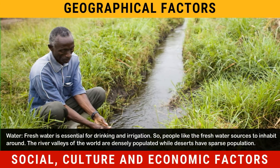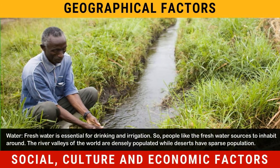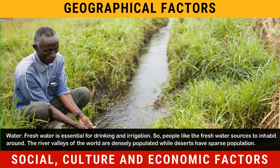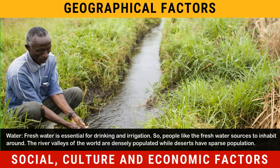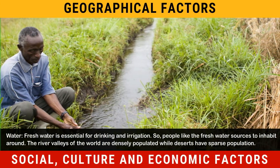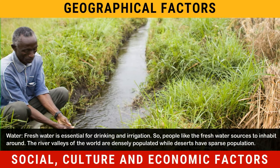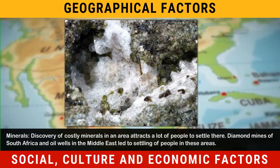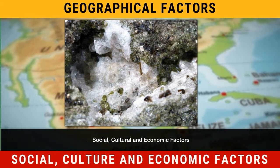Water: Fresh water is essential for drinking and irrigation, so people prefer to inhabit around fresh water sources. The river valleys of the world are densely populated while deserts have sparse population. Minerals: Discovery of costly minerals in an area attracts many people to settle there.